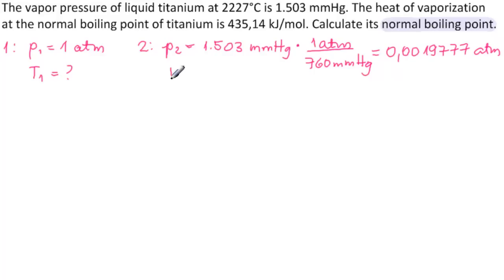So 0.0019777 atmospheres. And then we have T2 is equal to 2,227 degrees Celsius, but we need Kelvin. So that would be plus 273, which is 2,500 Kelvin.